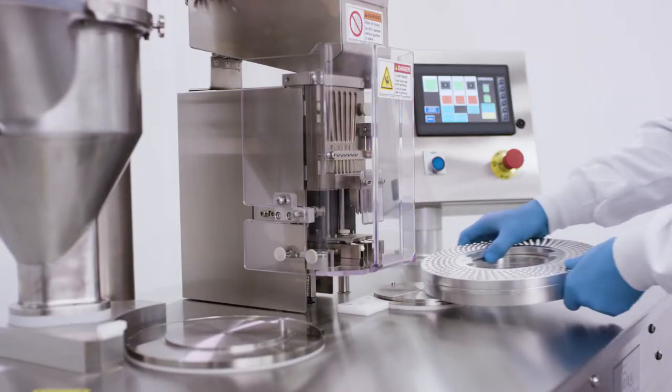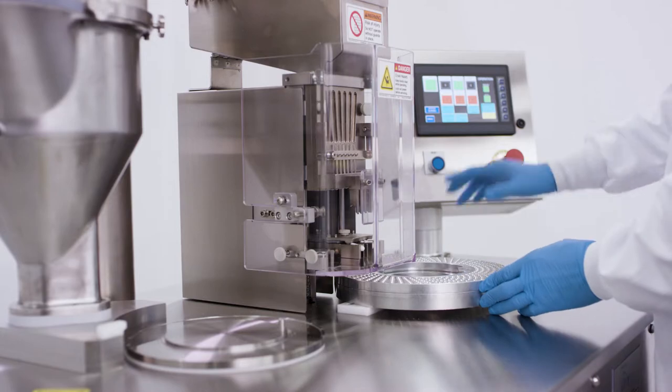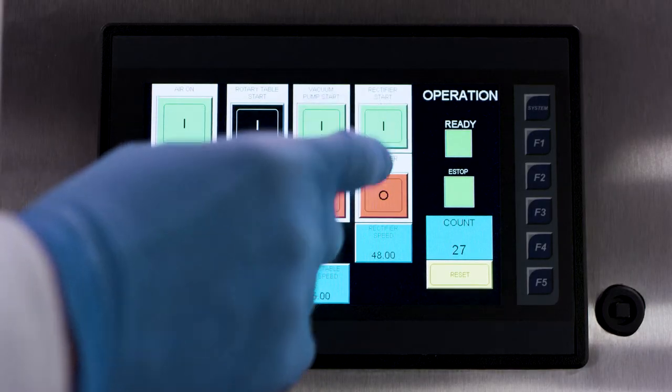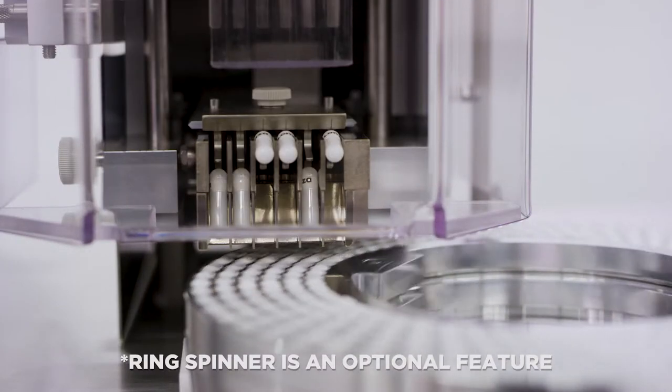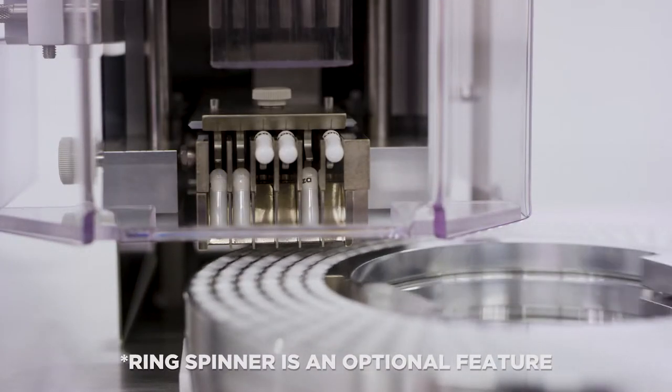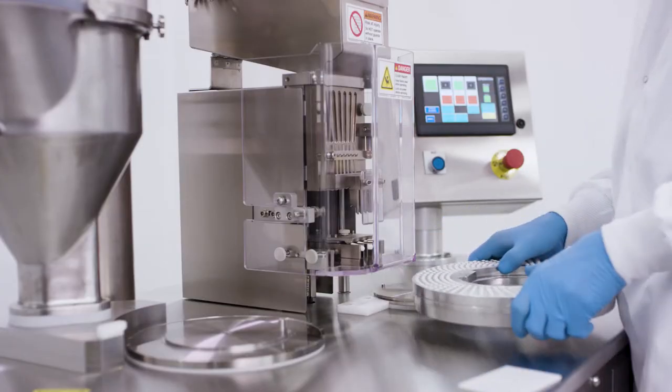Place the cap and body ring together into the ring carrier under the rectifier. Press the rectifier start button and the ring will begin to fill with capsules. Once filled with capsules, the ring will spin and then stop automatically. Remove the ring from the ring carrier.